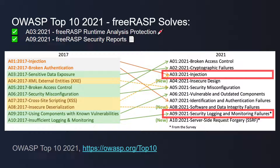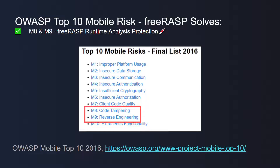FreeRASP helps you cover A03 and A09 vulnerabilities — that is injection and security logging and monitoring failures. A similar list made in 2016 presents vulnerabilities specific to mobile devices. FreeRASP helps you out of the box solve M8 and M9, that is code tampering and reverse engineering.